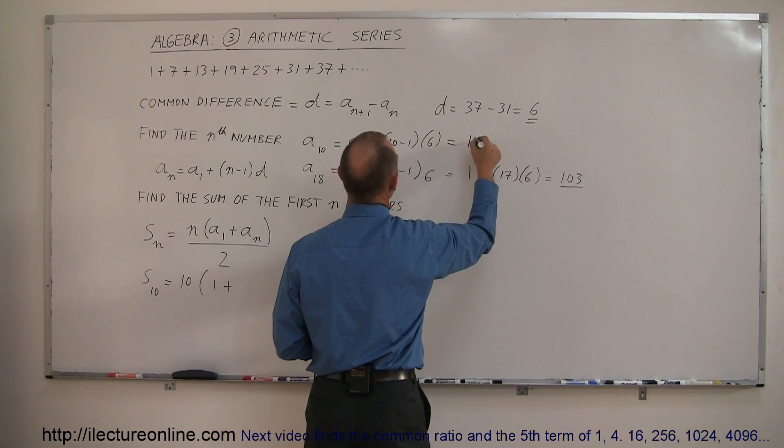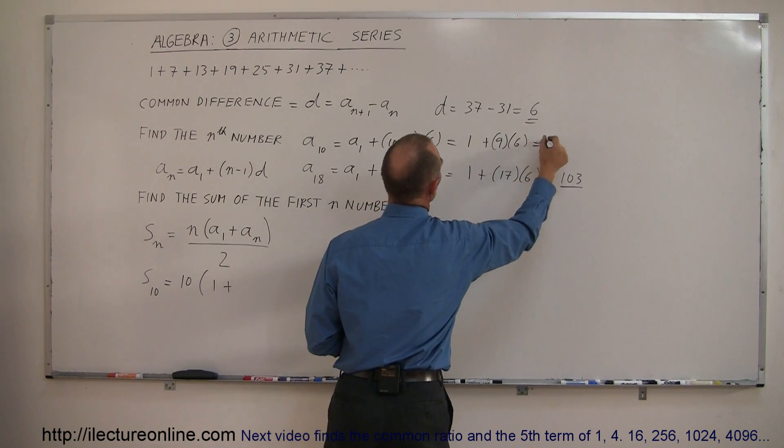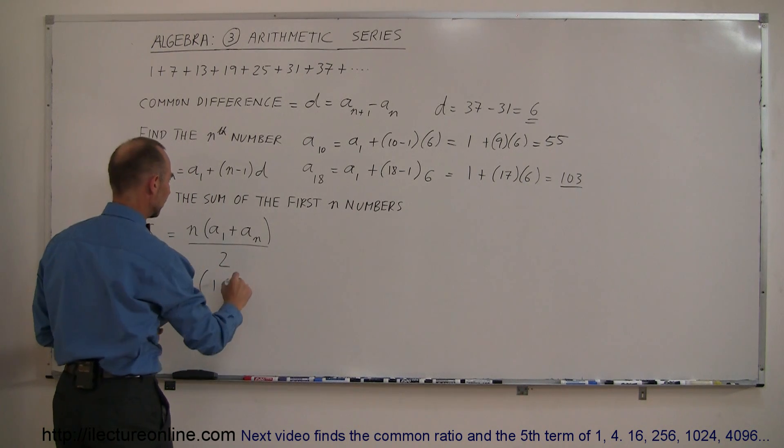And of course this would be 1, so this is equal to 1, plus 9, times 6, which is 54, plus 1 is 55. So you still have to use that to find the nth number in the series.